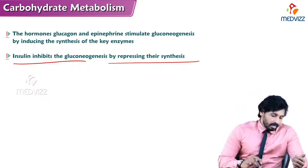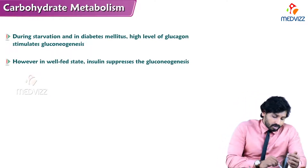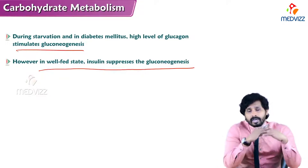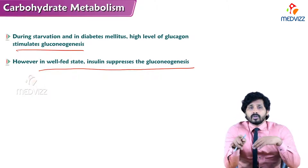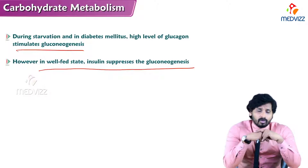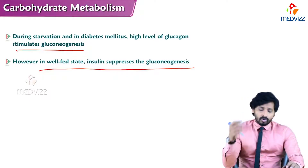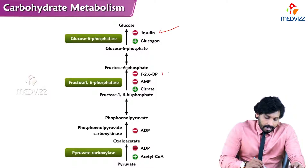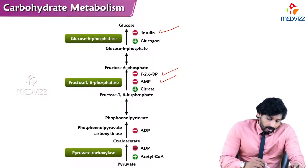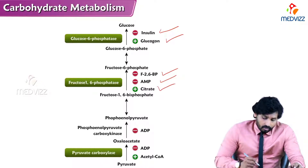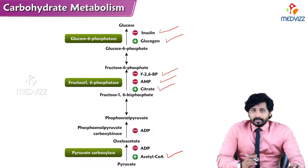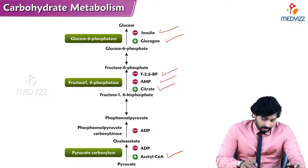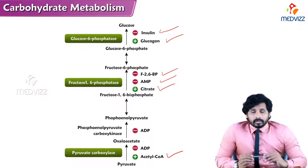Insulin inhibits gluconeogenesis by repressing the synthesis of the key enzymes. During starvation and in diabetes mellitus, high levels of glucagon stimulate gluconeogenesis, which can lead to production of ketone bodies. In the well-fed state, insulin suppresses gluconeogenesis. As shown in the diagram, insulin, fructose-2,6-bisphosphate, and AMP are inhibitors of gluconeogenesis, while glucagon, citrate, and acetyl-CoA are stimulators. These are the positive and negative modulators of the gluconeogenesis mechanism.